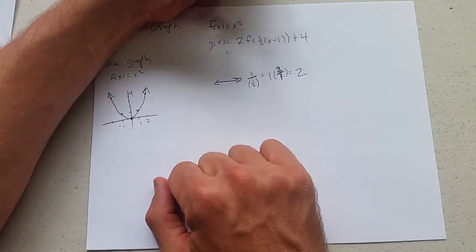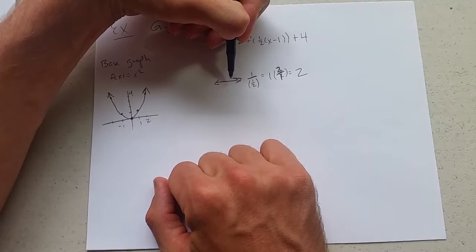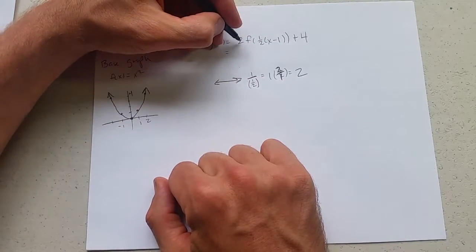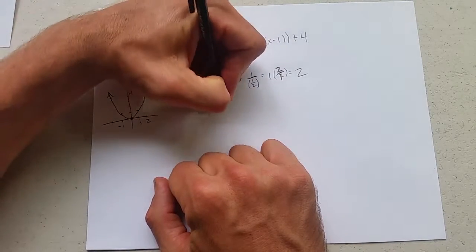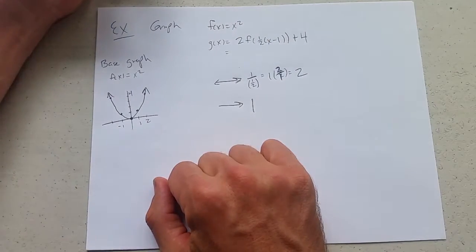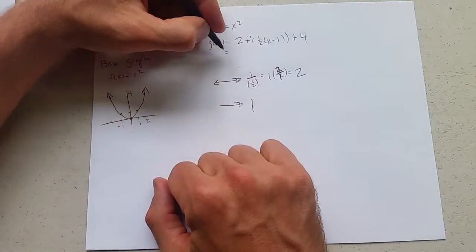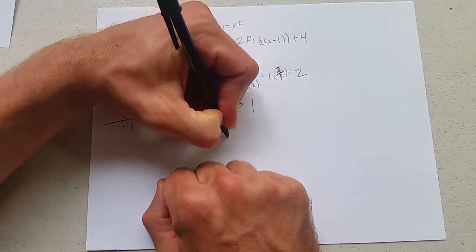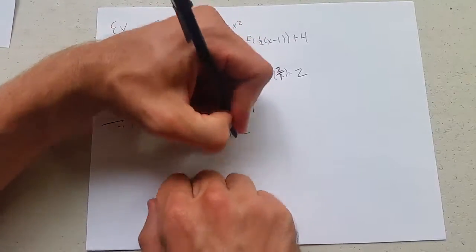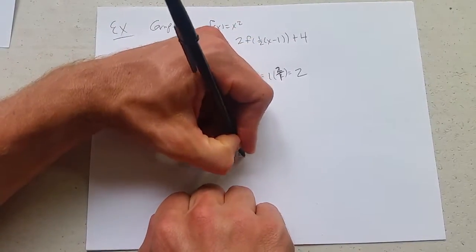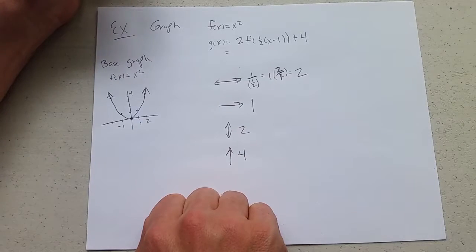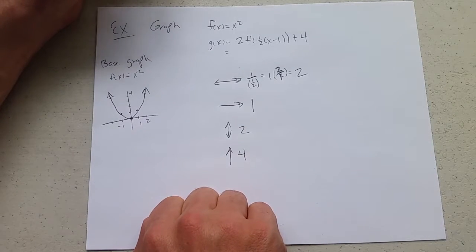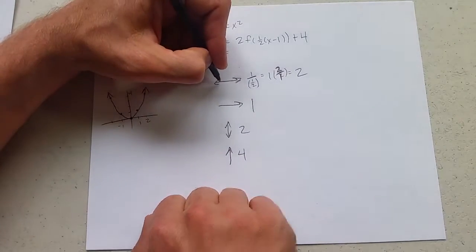So we're going to do a horizontal stretch by two, and then we're going to do a shift to the right one, and vertical stretch by two. Verticals are always much easier to see, and then shift up four. So we're going to do these operations here. First thing we're going to do is apply the horizontal stretch by two, and I'm going to redraw the graph over and over again.